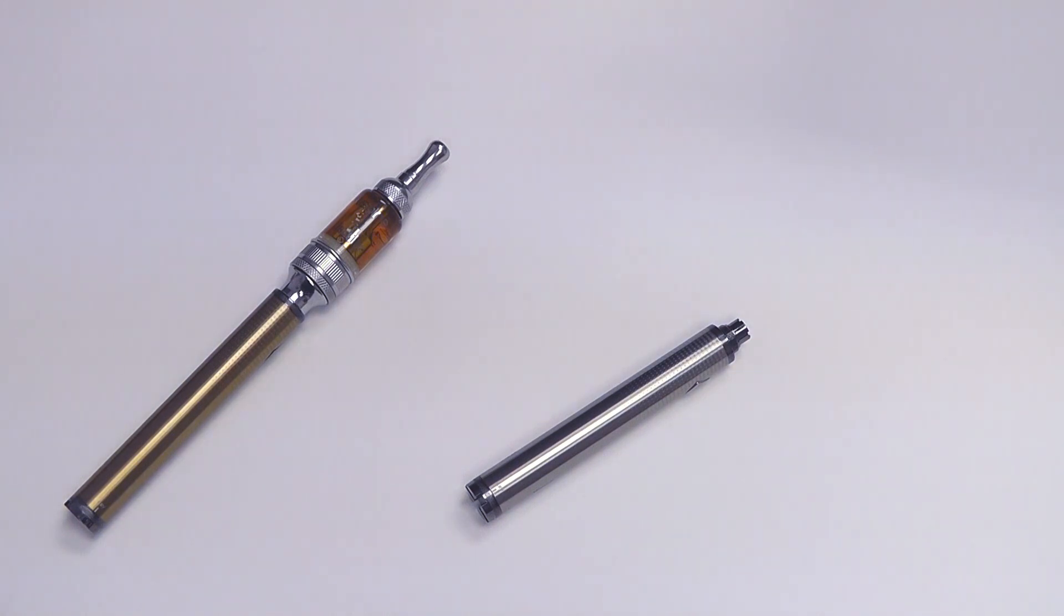It's a lot like the Joyetech eGo-C Twist and the EMAX out there, with the only difference being that the SmokTech EMAX does both variable voltage and variable wattage, whereas the eGo-C Twist and the Vision Spinners only do the variable voltage.